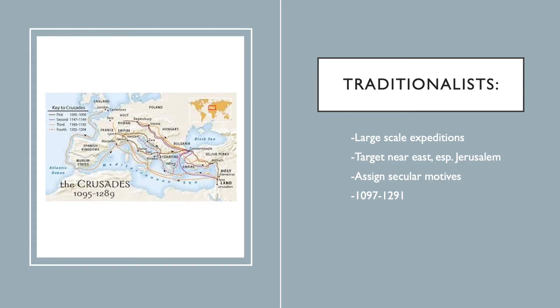When we look at the scholarship on the crusades, there are a few different camps — we'll talk about two. The first, and the one that's been around longer, are called traditionalists. They look at everything that happened in Western Europe between the 11th and 15th centuries and say they will only consider large masses of individuals going to the Near East — especially Jerusalem — between 1097 and 1291 as crusades. They really focus on moments when you have these large-scale expeditions.